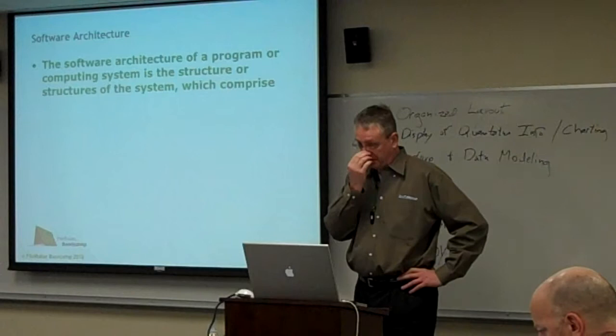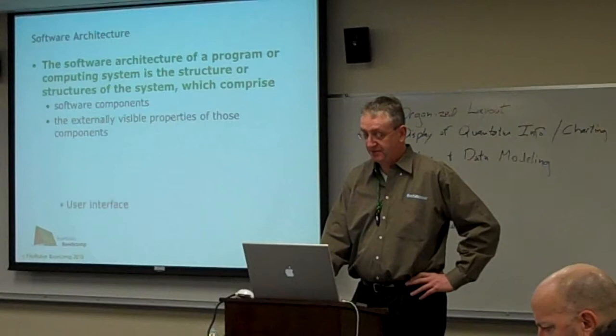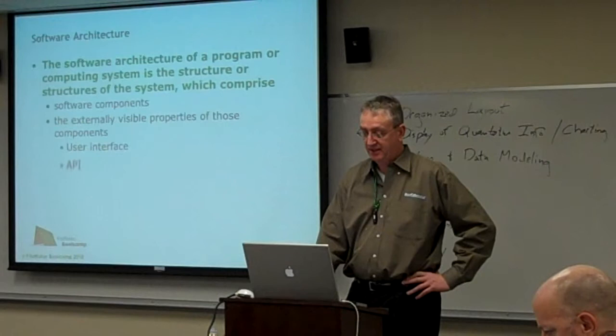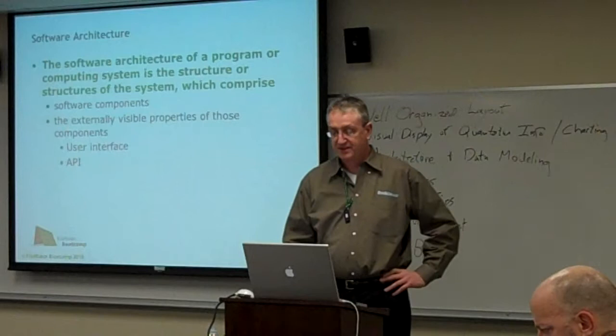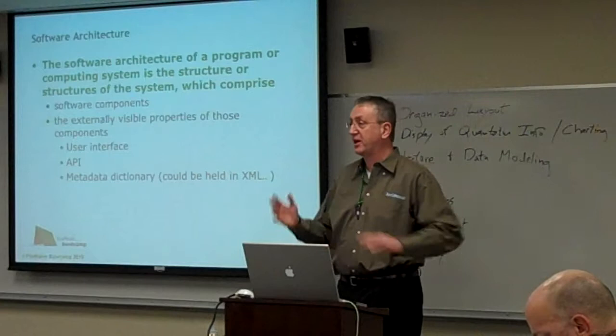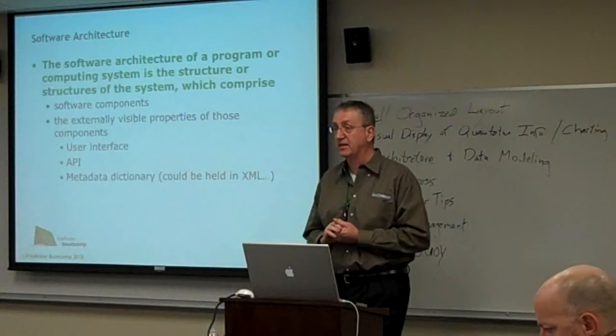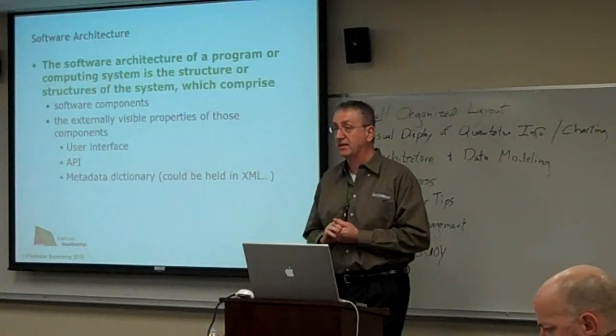Architecture should also be defined as the structure or structures of the system, which comprise software components and the externally visible properties of those components, such as the user interface. The externally visible properties would include things like APIs, user interface, and a metadata dictionary which could be held in XML or some other format — some place where information about the data is held. XML is a tag editing language where data is encapsulated in tags that are metadata about that data. It's one tool used for expressing this, one we can commonly get our heads around.